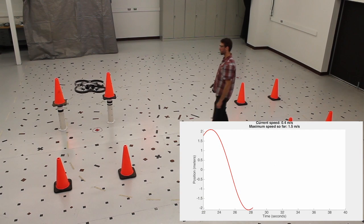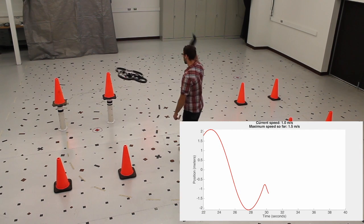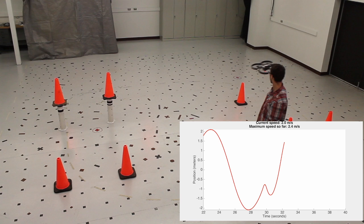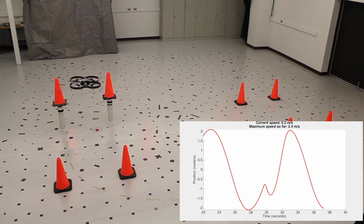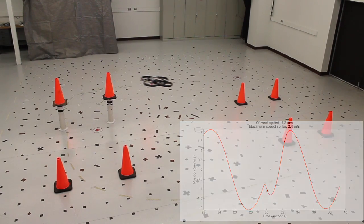Disturbances also yield unpredictable and unsafe behavior. As a result of the push, the quadrocopter achieves a maximum speed of 2.4 meters per second, much higher than the nominal maximum speed of 1.5 meters per second.